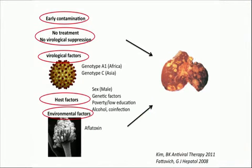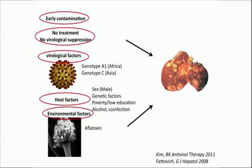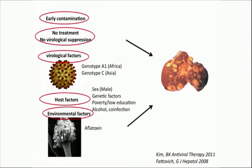To summarize, there is a combination of factors explaining the very high prevalence of liver cancer in poor countries: early contamination, absence of treatment, but also virological factors with specific genotypes like A1 and genotype C — affecting Africa and Asia — which may be associated with a higher risk of liver cancer. Host factors such as male sex, poverty, low education, alcohol, and co-infection are also very important. There are probably additional environmental factors like aflatoxin, a fungus infecting grains in tropical areas.